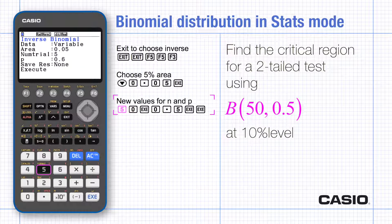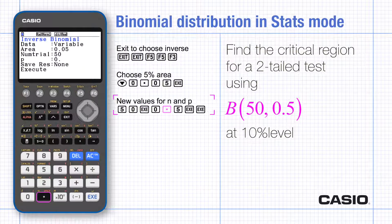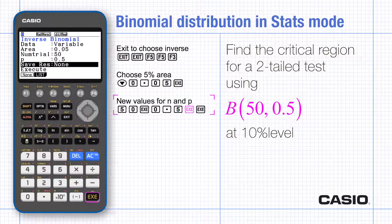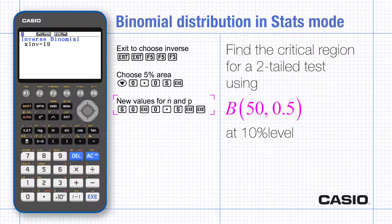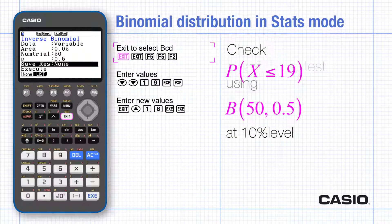Scroll down to choose the 5% area for the bottom tail of the distribution and enter 0.05. Put 50 and 0.5 as the new values for N and P and execute. The value X equals 19 is closest to 5% but it may be over 5%. We need to check the cumulative probabilities to find consecutive values where the cumulative probabilities go from under 5% to over 5%. Go back through the menus and choose cumulative probabilities.